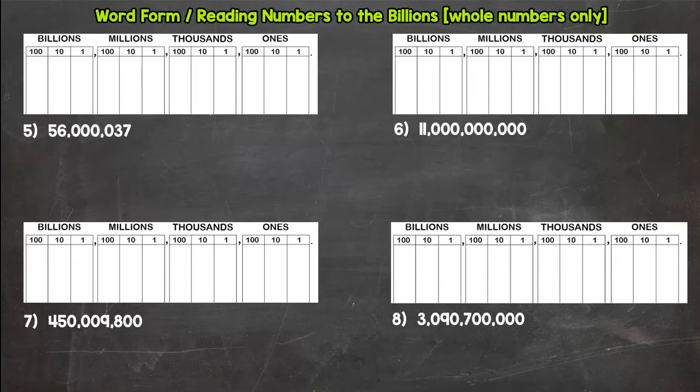All right, welcome to part two: word form and reading numbers to the billions. If you did not check out part one, I would suggest you go back and check it out. It has a better description of what we're doing and some of the tools we're using. For part two, we're just going to jump into number five here.